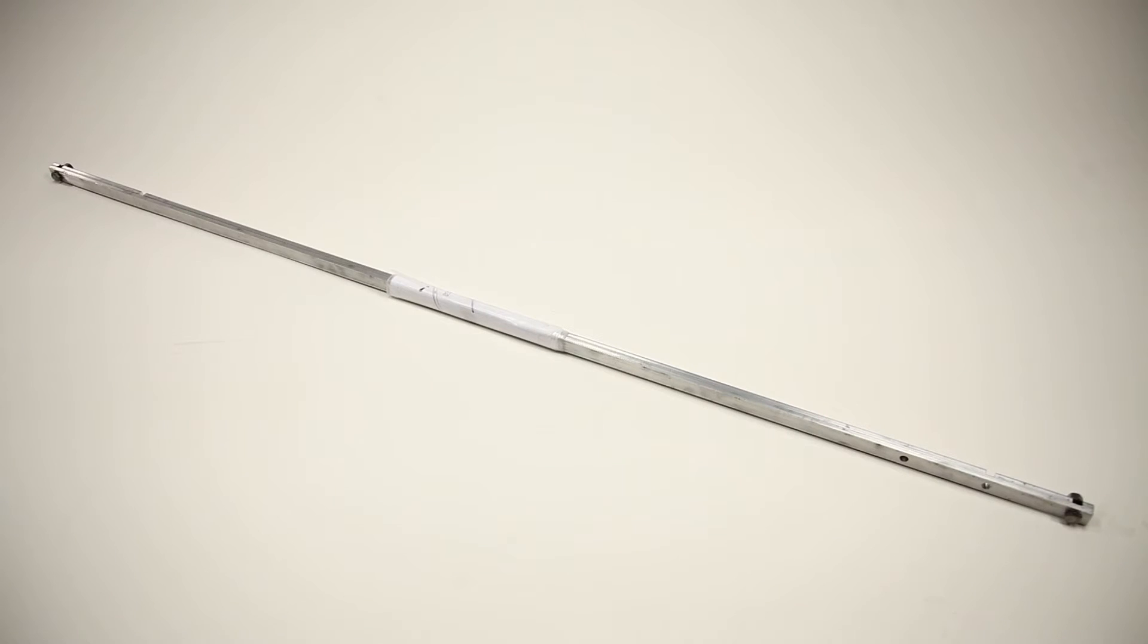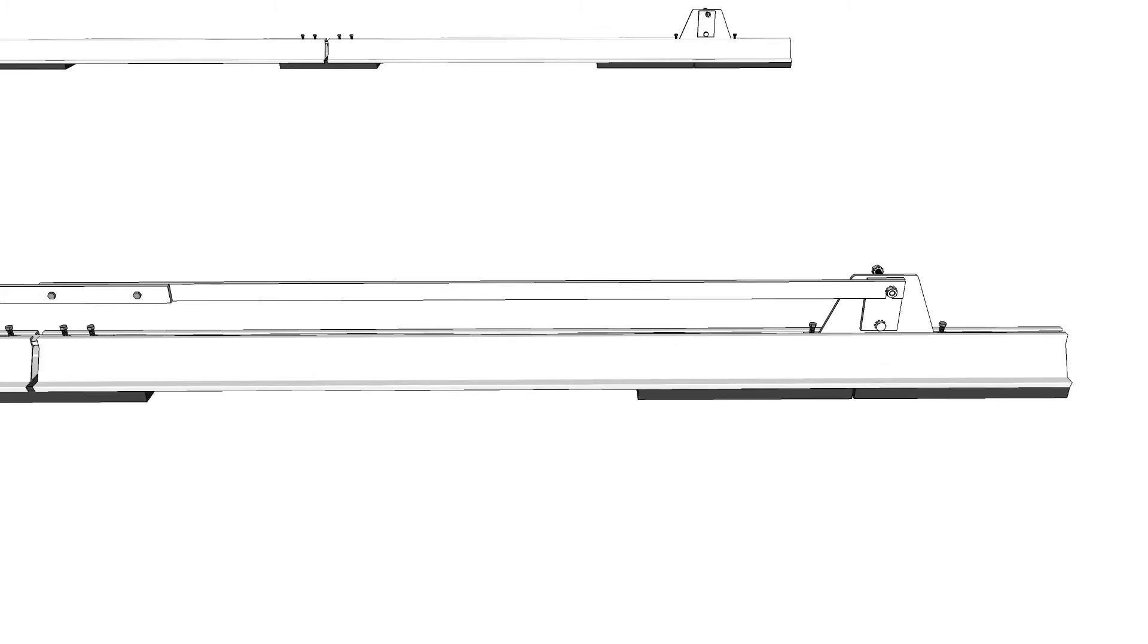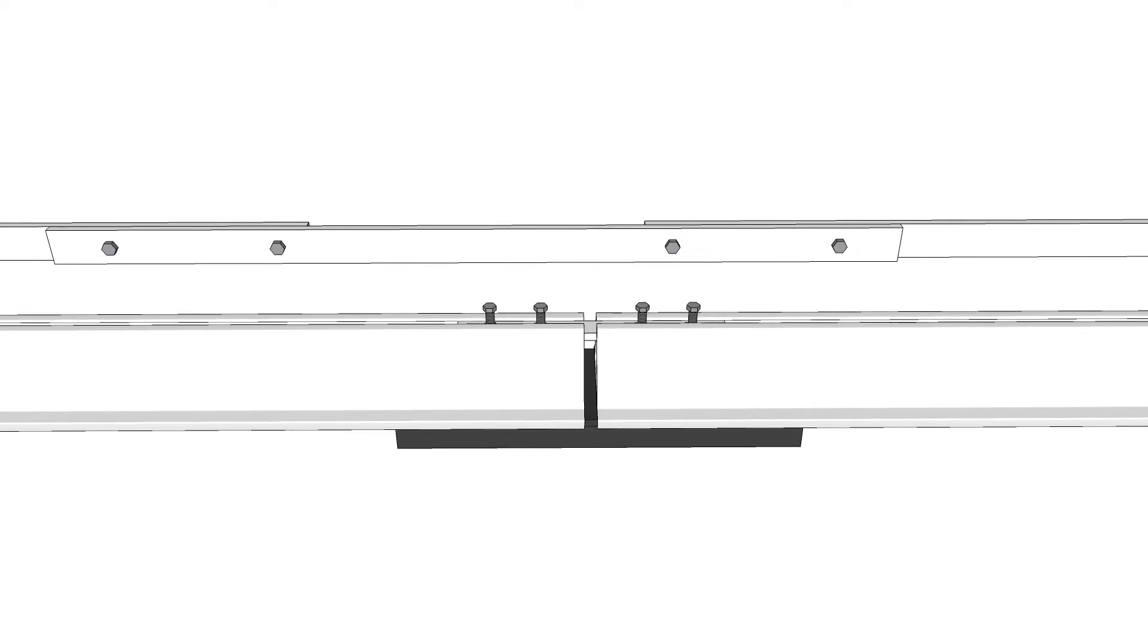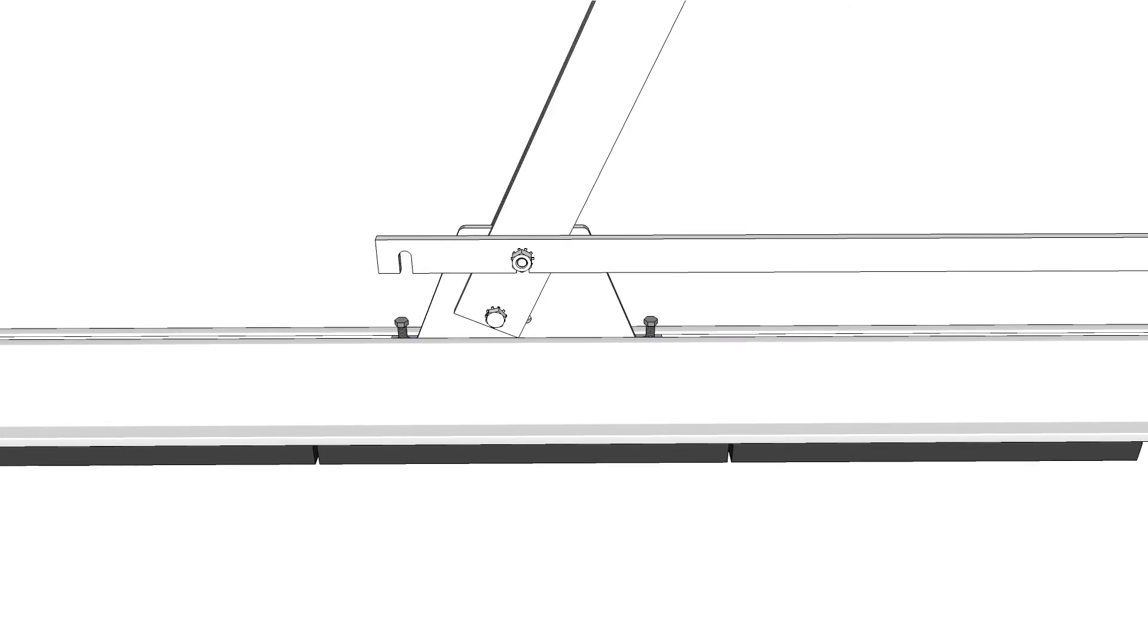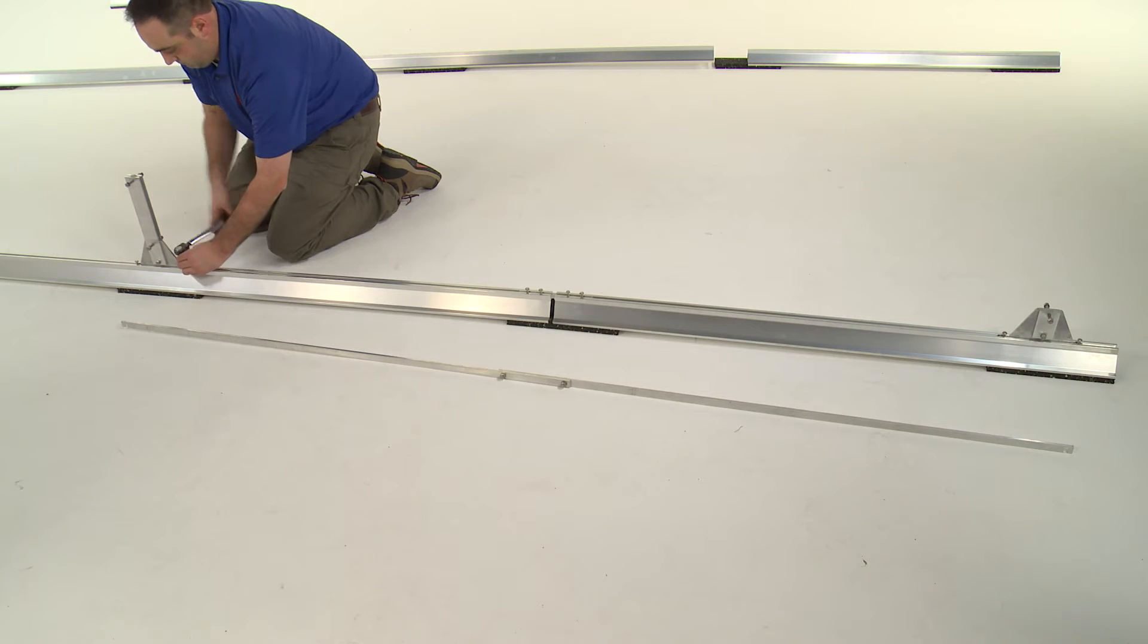Assemble the fin spacing tool per the included instructions and use it to begin locating the tall fins. Place the single slot on the threaded stud on the short fin. Slide the tall fin until the inner slot on the fin spacing tool drops over the lower threaded stud. Once the fin has been properly located, tighten the fin's cap screws to 6 foot-pounds.